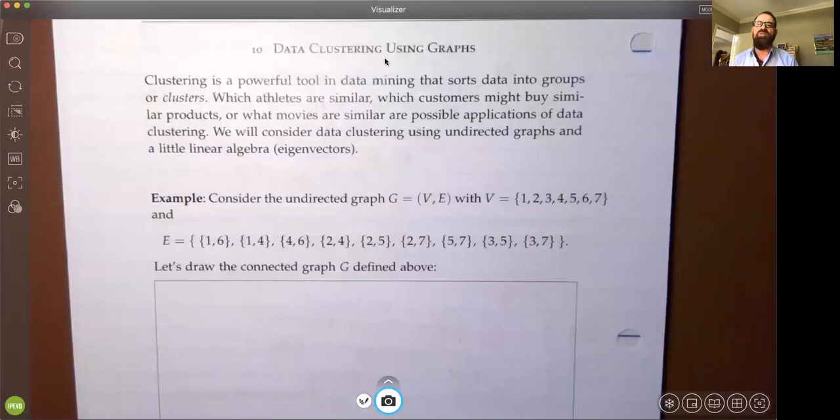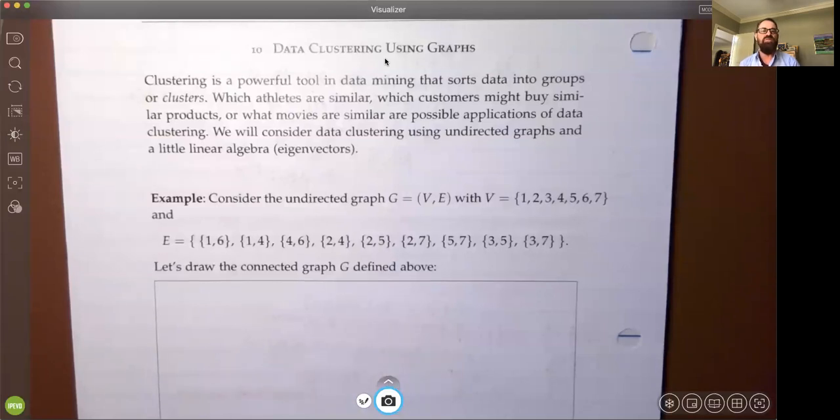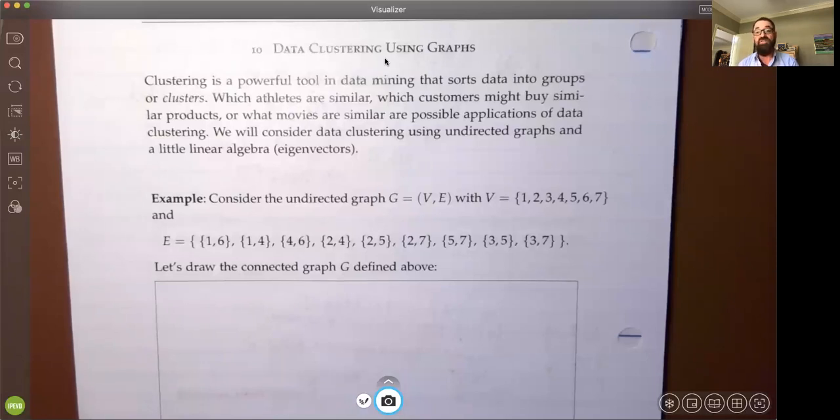Chapter 10 of the Computer Science 311-17 workbook is on data clustering using graphs. This chapter is an application of graph theory that's very relevant today. Classification and clustering are two processes very commonly used in data analytics, with applications like comparing athletes' performance, recommendation systems for products, and determining similar movies. We're going to look at data clustering using undirected graphs and show you why linear algebra is still very important. There's a strong tie between linear algebra, which you took in Math 251, and graph theory.